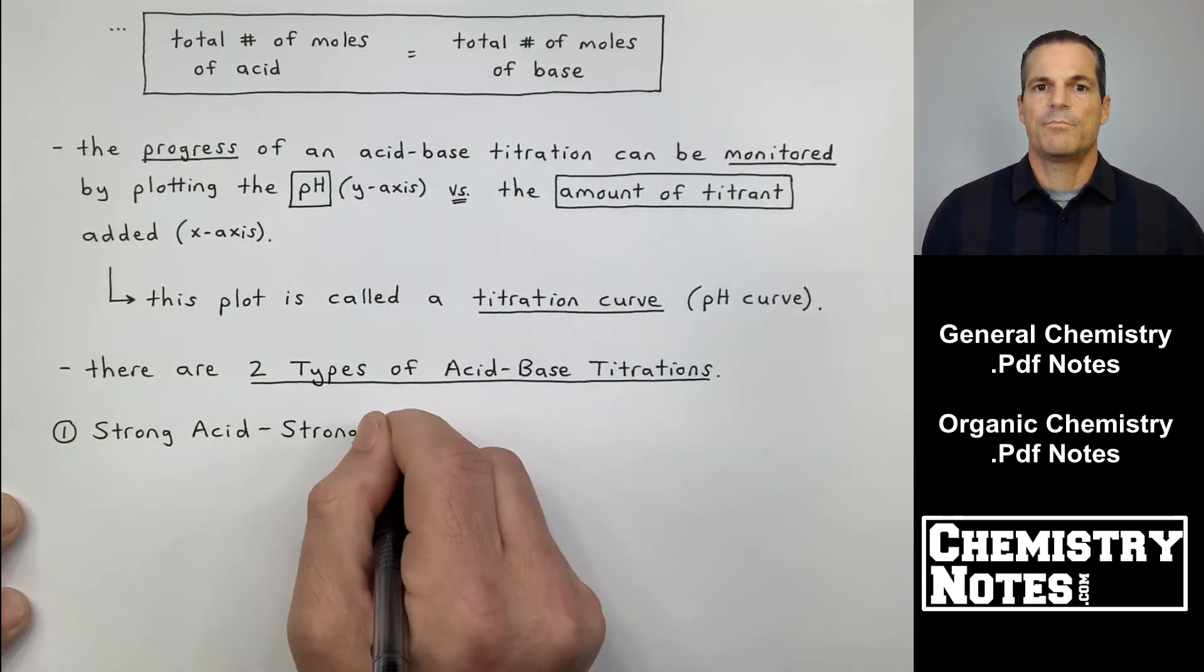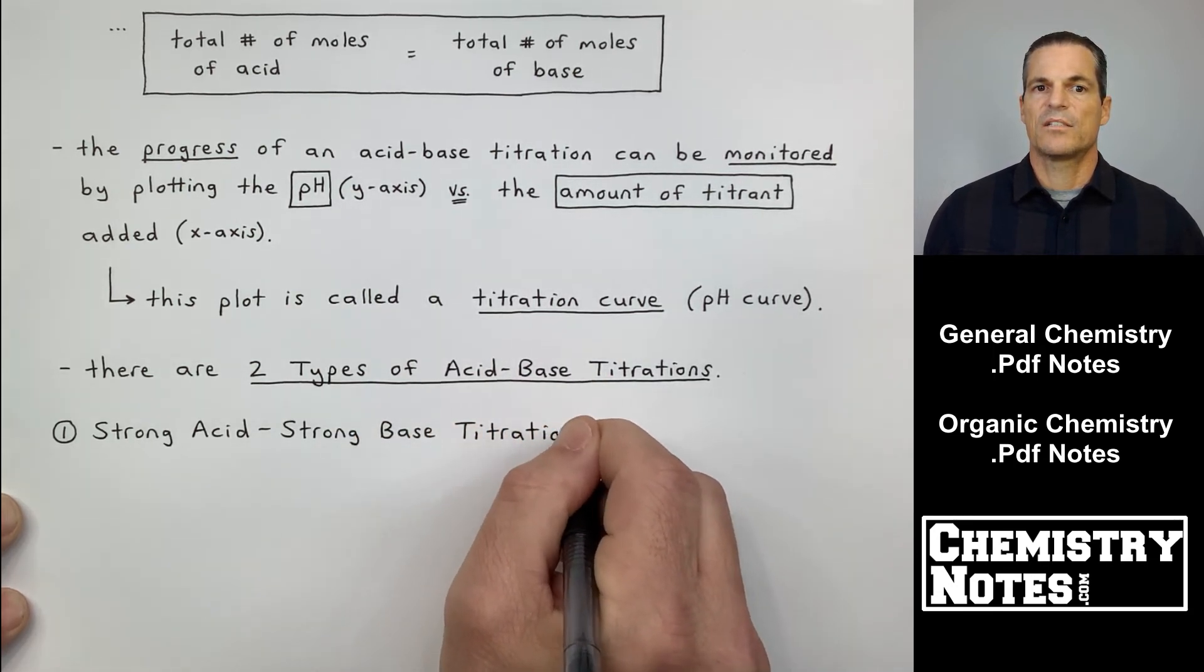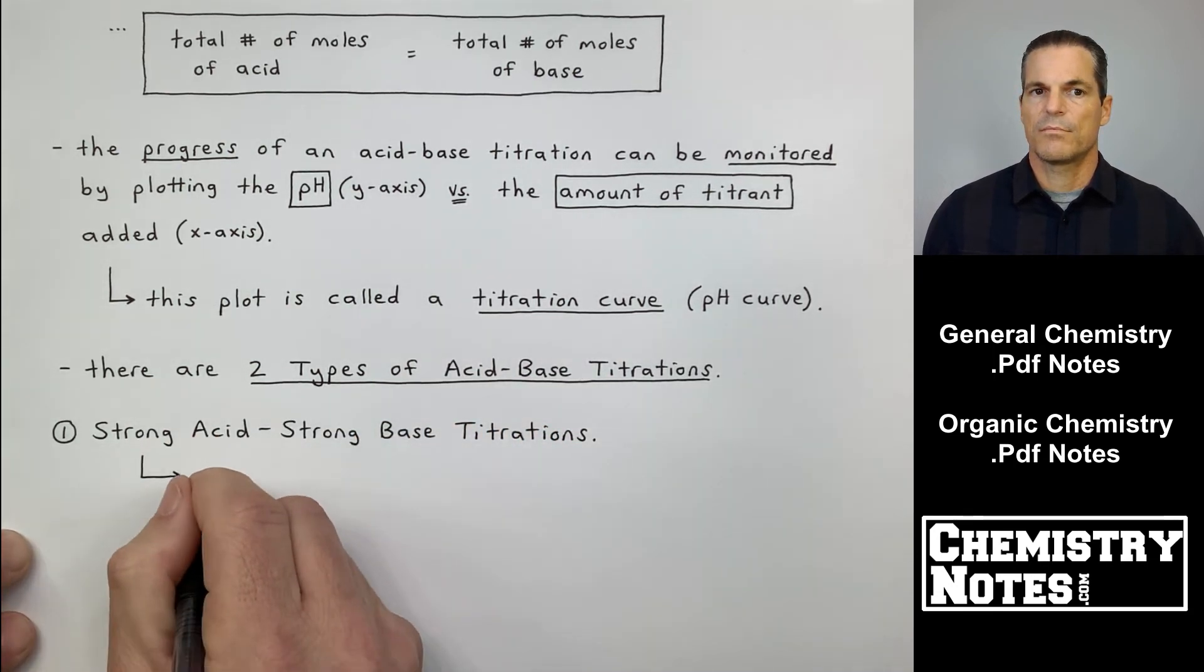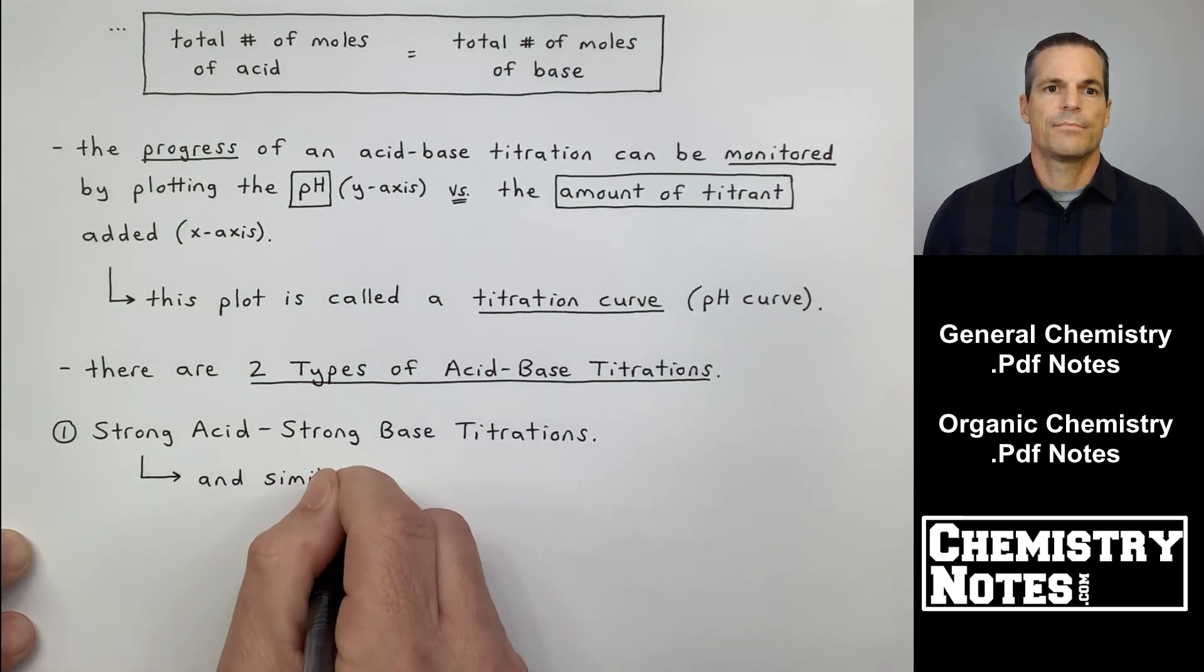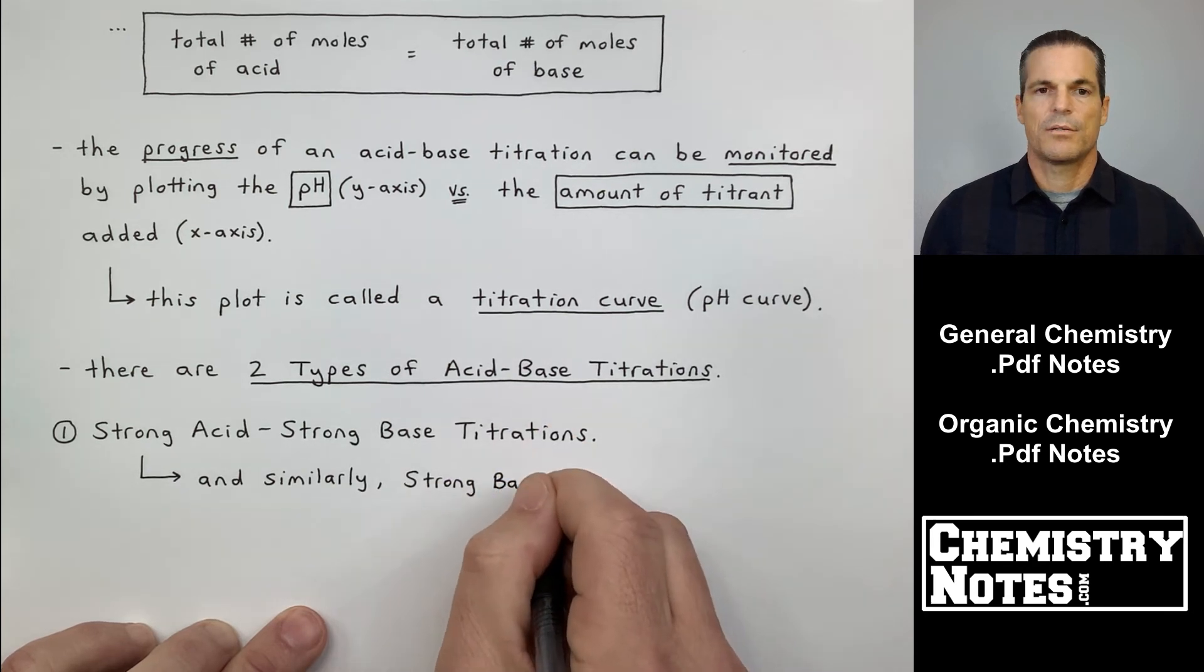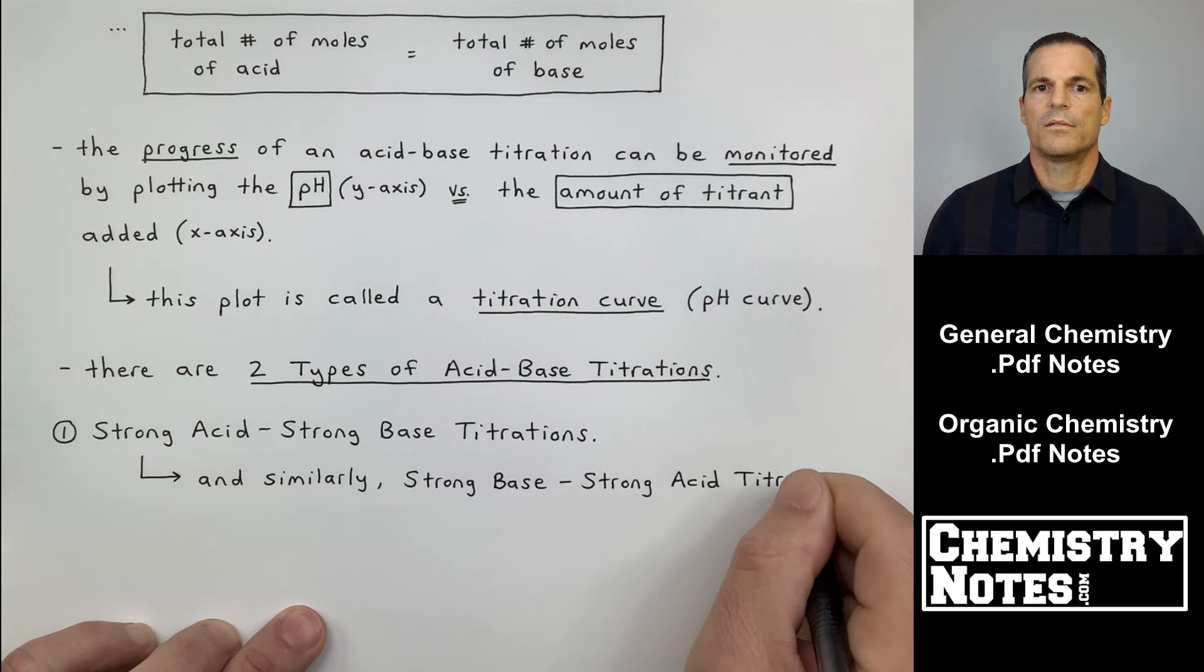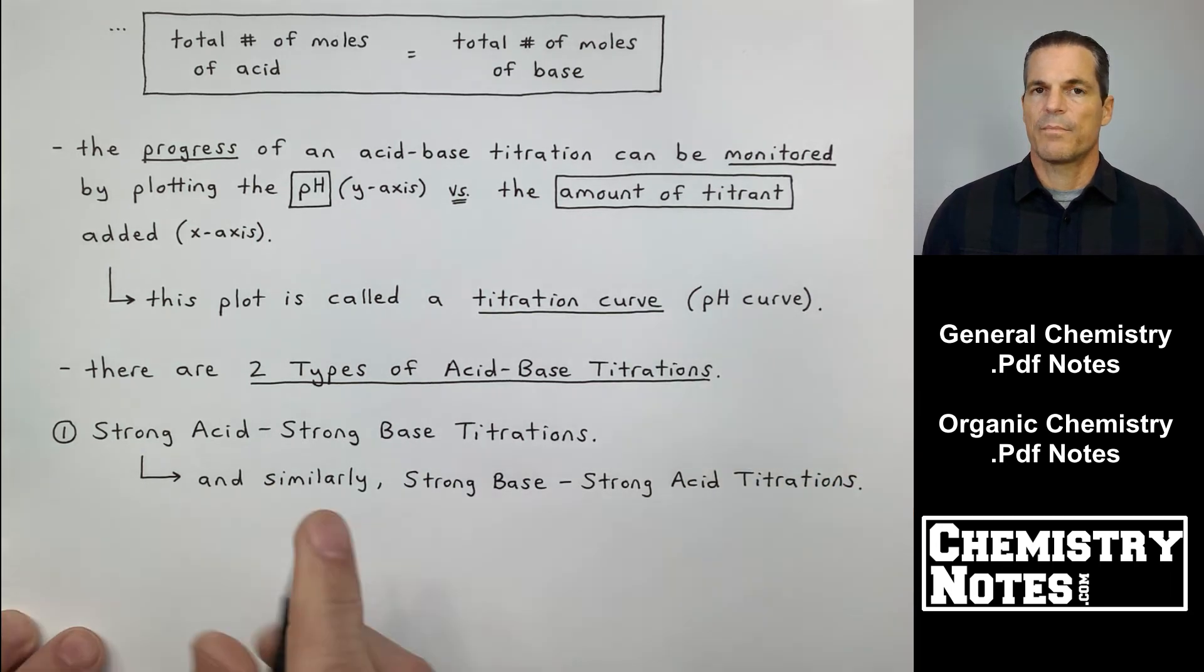And then the second bullet point here is what I wanted to mention. It says there are two types of acid-base titrations, and we're going to analyze these thoroughly throughout the rest of section 15. Two types of acid-base titrations. Number one is a strong acid-strong base titration, and similarly, a strong base-strong acid titration.